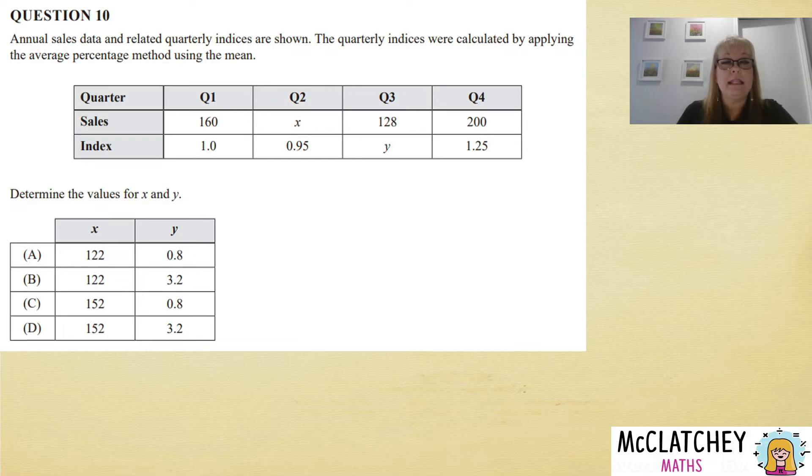And over here, 200 is 125% of this original value, or 25% more. We can work that out: a quarter of 160 is 40, add that on we get 200. So it's 125% of 160. As you can see, these indices help us work out these missing values. So let's do the calculations for that now.